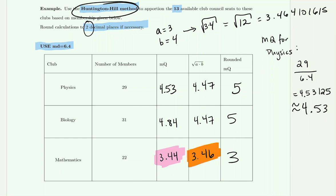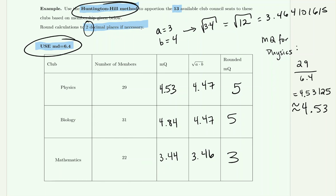So the mathematics club gets 3 of the 13 council seats, physics gets 5, and biology gets 5. The main difference between Jefferson and Huntington Hill is in the final steps: Huntington Hill requires finding the square root of A times B, and the two methods use different rounding schemes.